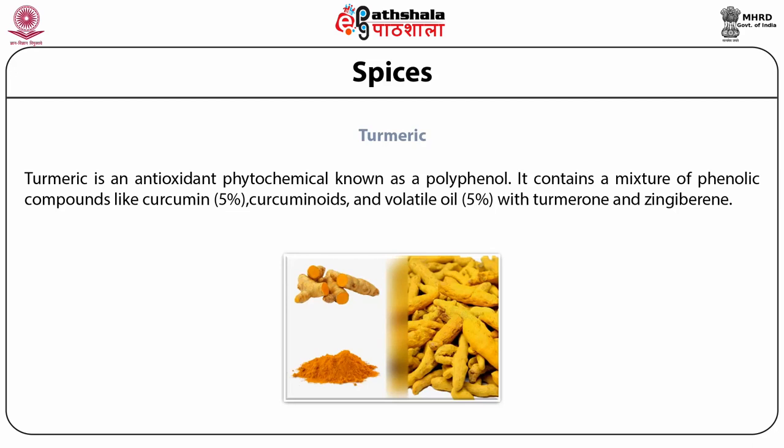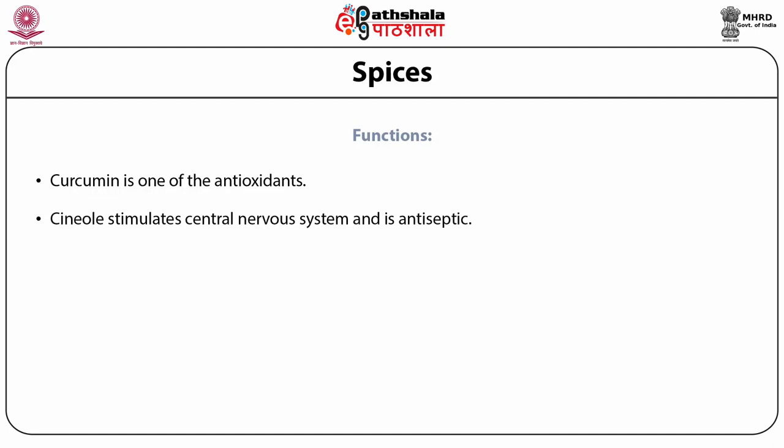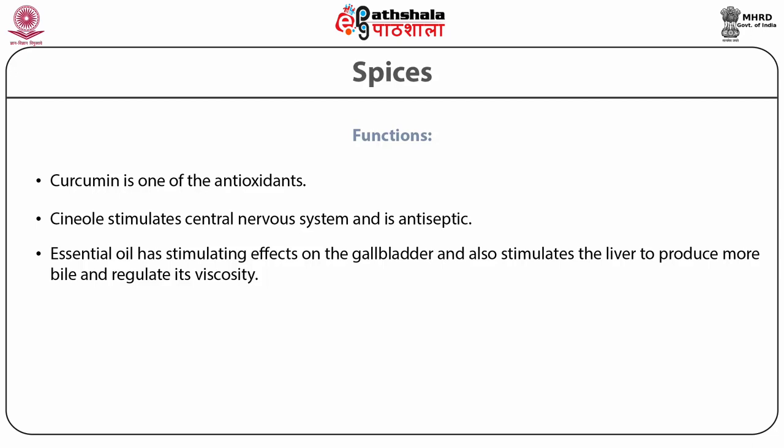Ketonic sesquiterpenes, specifically turmerone, are responsible for the aroma of turmeric. Functions include: curcumin is one of the antioxidants; cineol stimulates the central nervous system and is antiseptic; essential oil has stimulating effects on the gallbladder and also stimulates the liver to produce more bile and regulate its viscosity. Curcumin exists in two forms, keto and enol. Keto form is preferred in solid seeds while enol form is in solution, and it is a pH indicator as it turns yellow in acidic solution and bright red in basic solution.